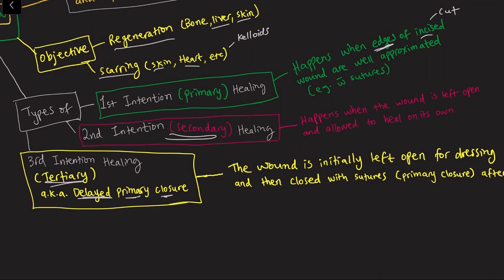Second intention healing, or secondary healing, happens when the wound is left open. After the surgery, the surgeon performs the operation and then, instead of closing up the skin with sutures, the wound is left open and allowed to heal on its own. The surgeon does not suture the wound edges.